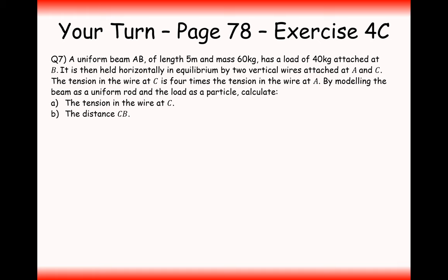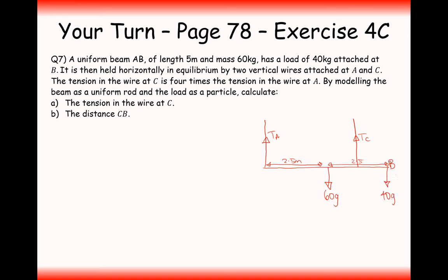Your turn — pause the video, draw a clear diagram, and have a go at the question. For this question, we have tensions in the string at A and at C. There's a uniform rod of mass 60 kilograms, so a weight of 60G newtons goes at the midpoint — since the rod has total length 5 metres, the centre is at 2.5 metres. There's also a load of 40G newtons at point B.